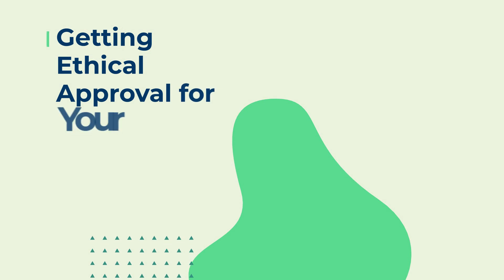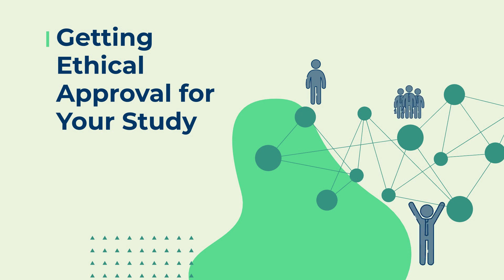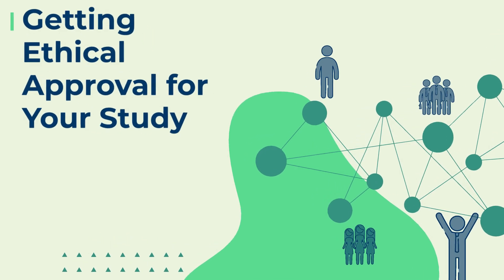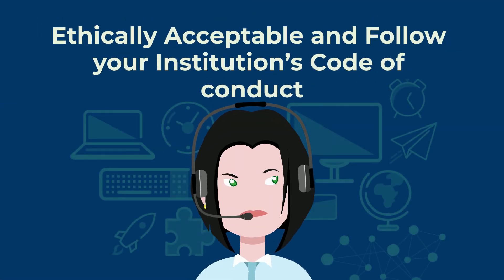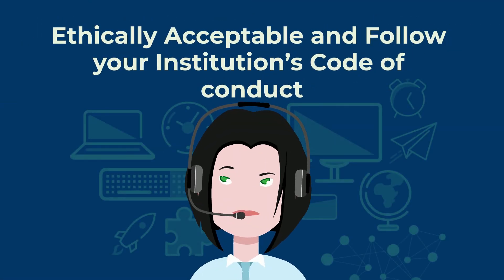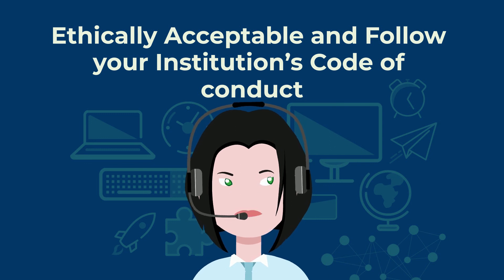Getting ethical approval for your study: Before you start any study involving data collection with people, you'll submit your research proposal to an institutional review board. An IRB is a committee that checks whether your research aims and research design are ethically acceptable and follow your institution's code of conduct. They check that your research materials and procedures are up to code.